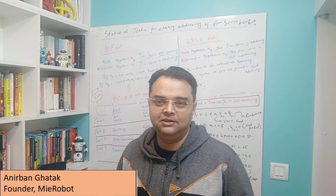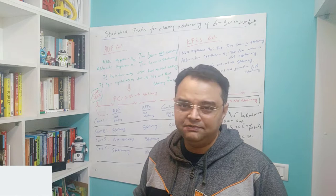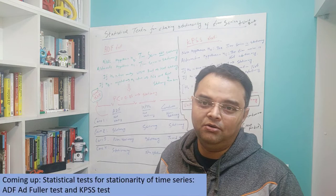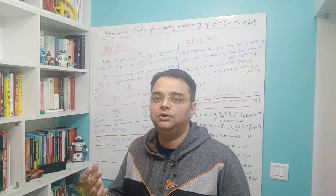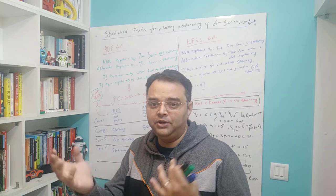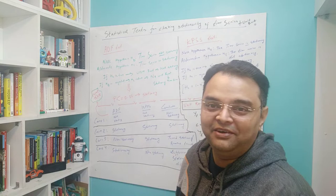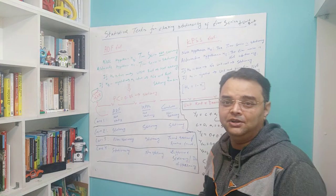Welcome. In this video we'll be looking at the statistical tests of stationarity — how to determine if a time series is stationary. Specifically, we'll be looking at two statistical tests: the ADF, or Augmented Dickey-Fuller test, and the KPSS test. I'll also be giving you a cheat sheet for when you've used both ADF and KPSS and the two tests are not in sync with each other.